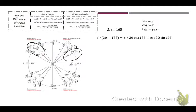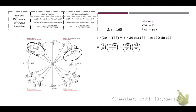Remember: sine is your Y value, cosine is your X, tangent is Y over X. So sine of 30 — the Y value at 30 — is 1/2. Cosine of 135 is negative √2 over 2. Cosine of 30 is √3 over 2. And sine of 135 is √2 over 2.